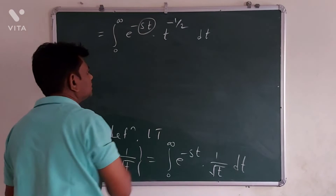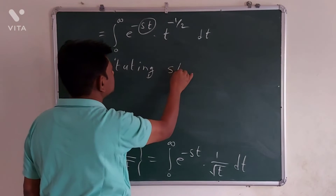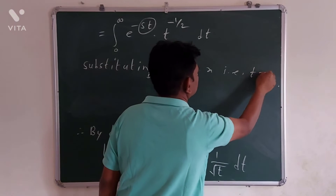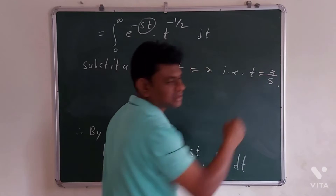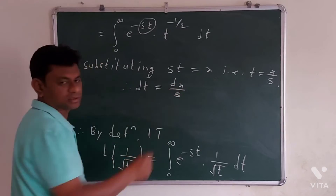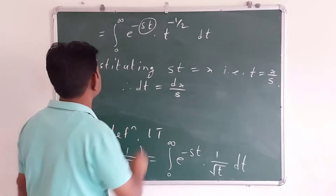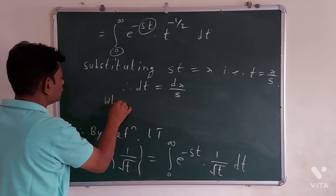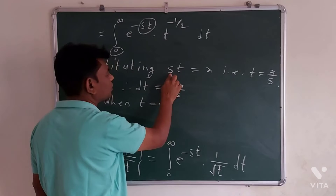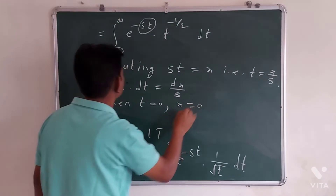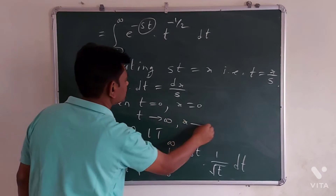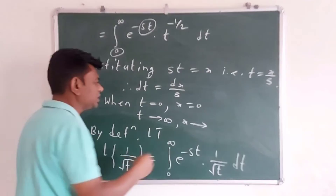Now, substituting st equal to x, that is t equal to x over s, therefore dt is equal to dx over s. For the limits of integration: when t equals 0, x equals 0; and when t tends to infinity, x tends to s times infinity, which is again infinity.